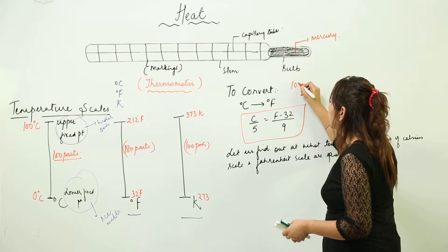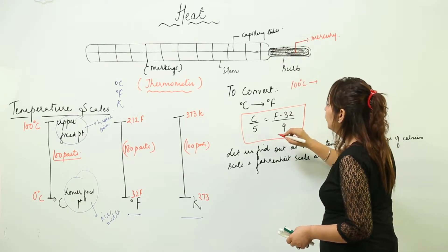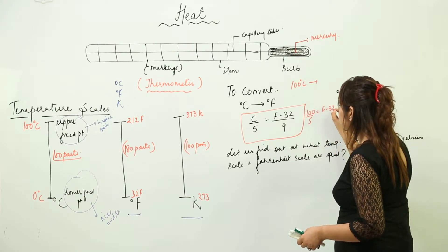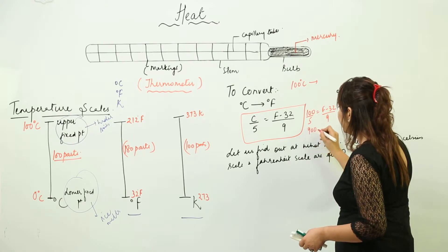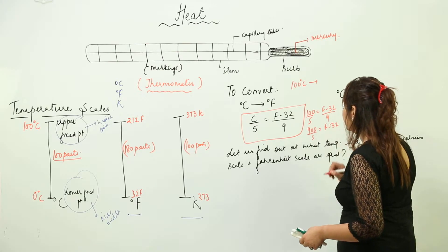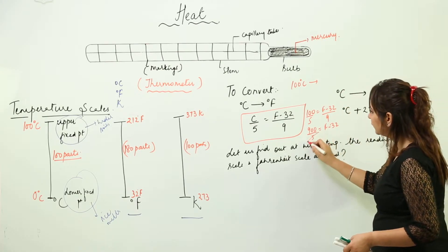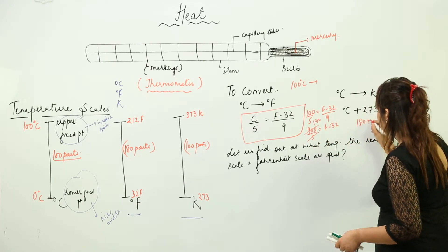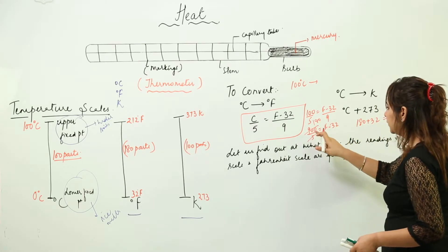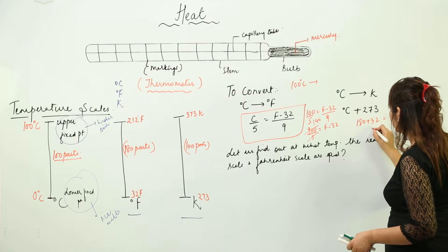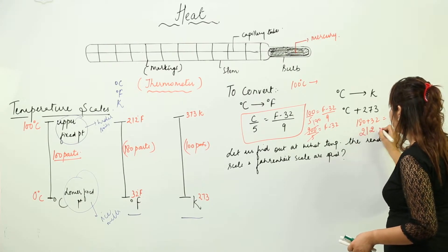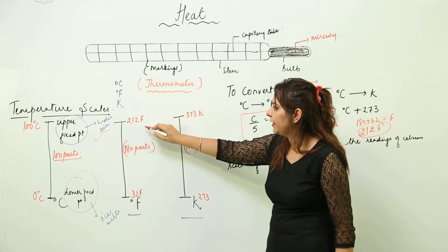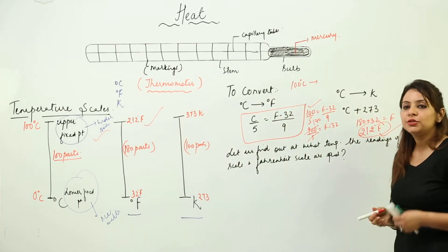Suppose you have a temperature of 100 degrees Celsius and need to convert it into Fahrenheit. You substitute into the formula: 100/5 = (F − 32)/9, which gives 900/5 = F − 32, so 180 = F − 32, meaning F = 180 + 32 = 212 degree Fahrenheit. This confirms that 100°C equals 212°F, which is the upper fixed point on the Fahrenheit scale.